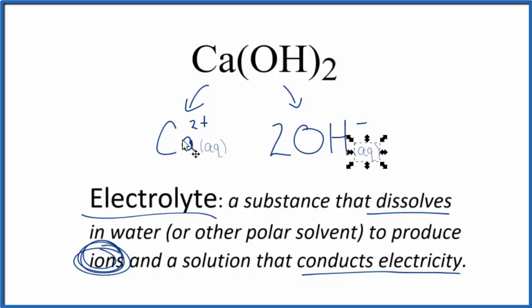But the thing is, calcium hydroxide is only slightly soluble. So something like, say, sodium hydroxide, where it dissociates completely 100%, that really is quite a strong electrolyte. Calcium hydroxide, it's kind of more a definitional thing. What does dissolve dissociates completely.